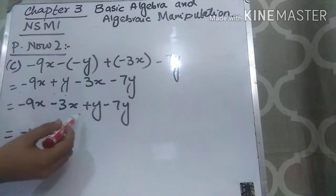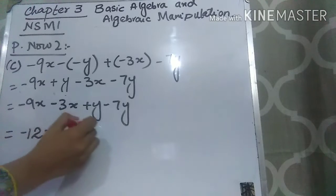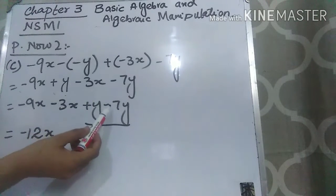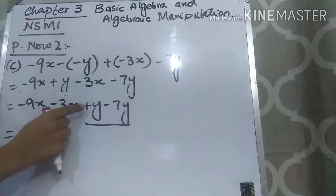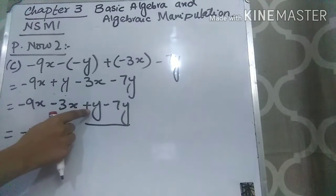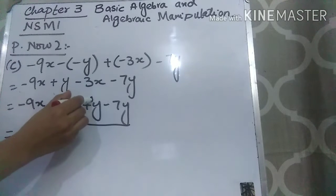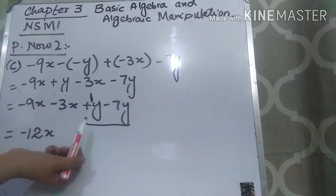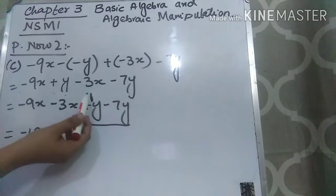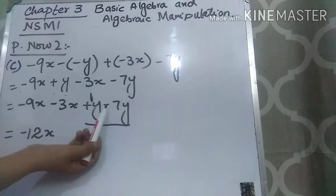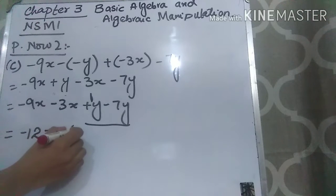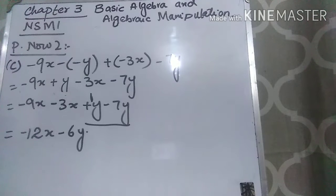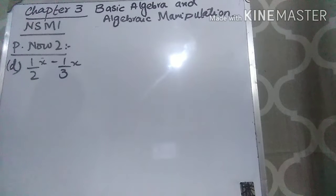Now solve the Y like terms: plus y and minus 7y. Plus minus is minus, so do subtraction. Remember, when there is no coefficient with a variable, the coefficient is 1. So subtract 1 from 7 to get 6y. Write the sign of the bigger number which is minus: minus 6y. The answer to Part C is minus 12x minus 6y.